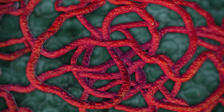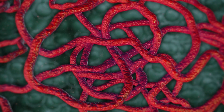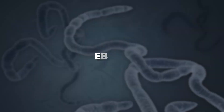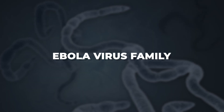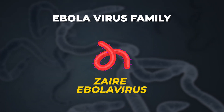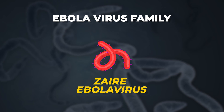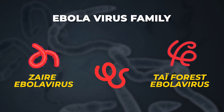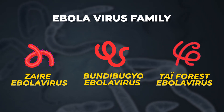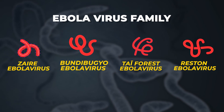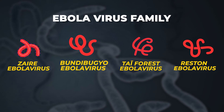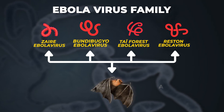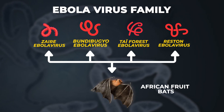Sudan Ebola virus is part of the Ebola virus family, which also includes Zaire Ebola virus, Tai Forest Ebola virus, Bundibugyo Ebola virus, and Reston Ebola virus. These viruses are believed to be naturally found in African fruit bats.